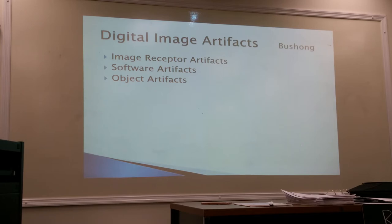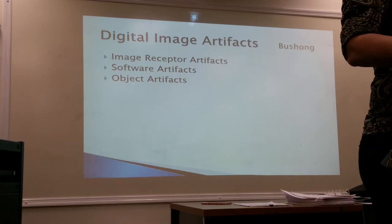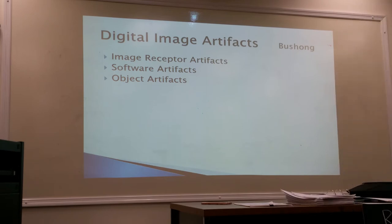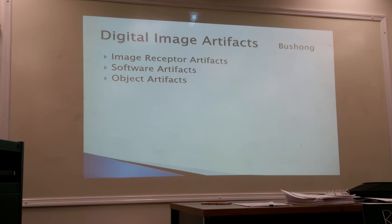What about a prosthetic device where you have screws in there — is that an artifact? No. You have to decide: is that something you can change, something you can fix, or something we may be looking at to see if the screws are still in place? What about extra hanging skin or soft tissue? I put all of that under object artifacts. Let's think about these things and whether they are artifacts or not by the end of this.